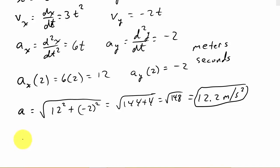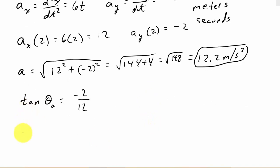The direction is tangent θ_a equals a_y, which is -2, over a_x, which is 12. So tangent θ_a equals -1/6.